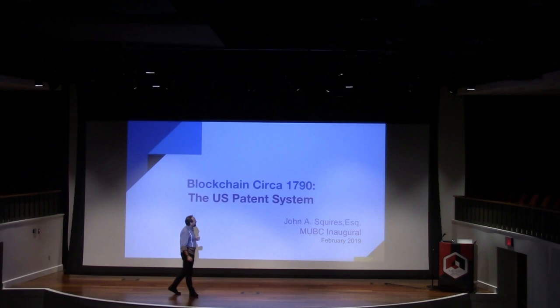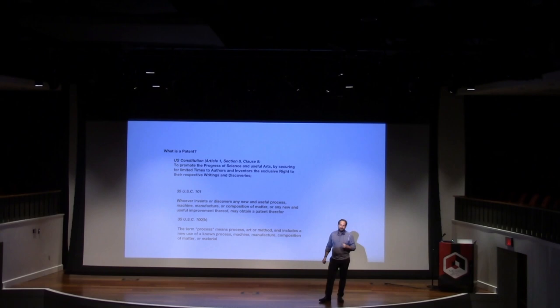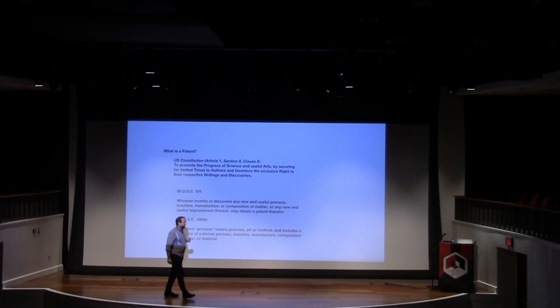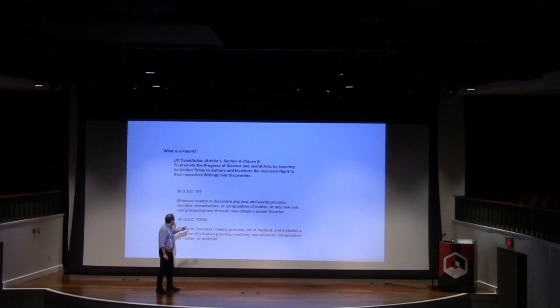Let's start out — what is a patent? Exclusive rights issued from the government. You actually find the basis for patents in the U.S. Constitution, Article 1, Section 8, Clause 8. From that, Congress promulgated the first Patent Act in 1790, which provides for inventions — whoever discovers any new and useful process, machine, manufacture, composition, or any new or useful improvement thereof, you may obtain a patent. The defined term 'process' means any process or method, and includes new use of a known process. Keep that in the back of your mind.